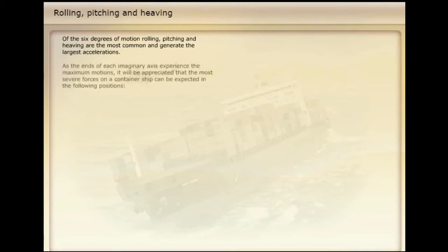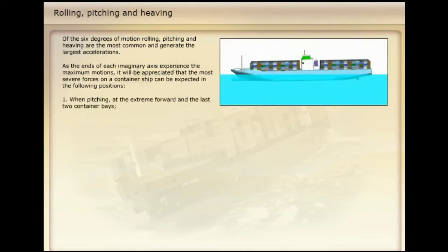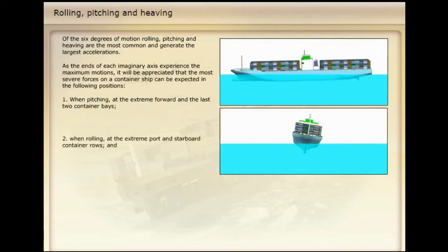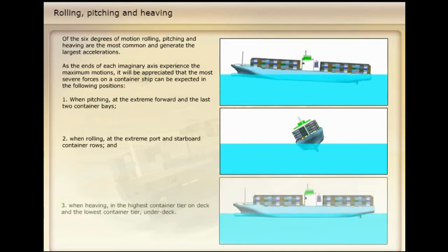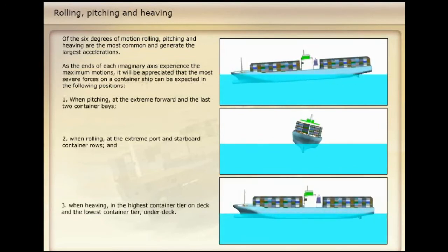Of the six degrees of motion, rolling, pitching, and heaving are the most common and generate the largest accelerations. As the ends of each imaginary axis experience the maximum motions, the most severe forces on a container ship can be expected in the following positions: (1) when pitching, at the extreme forward and the last two container bays; (2) when rolling, at the extreme port and starboard container rows; and (3) when heaving, in the highest container tier on deck and the lowest container tier under deck.